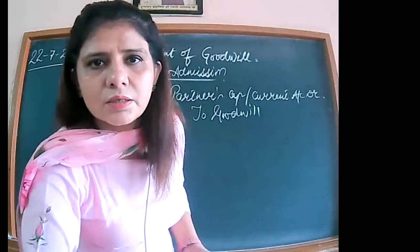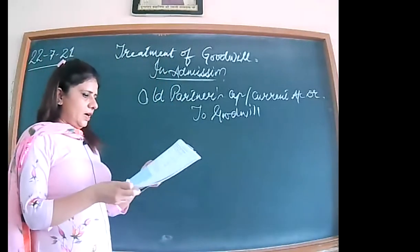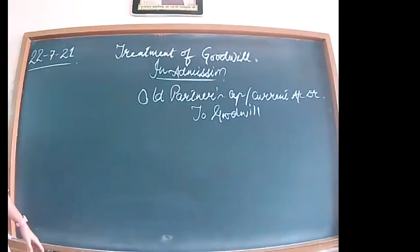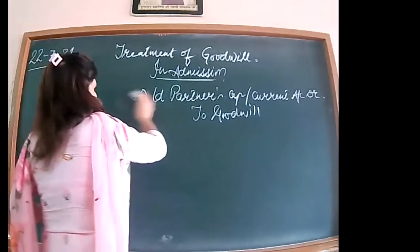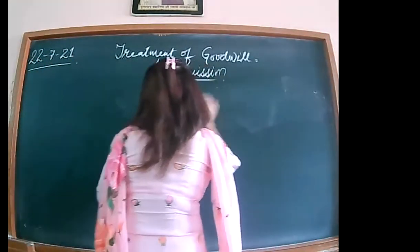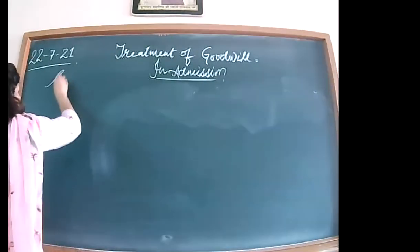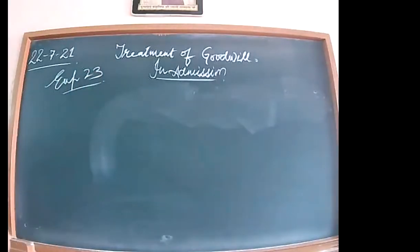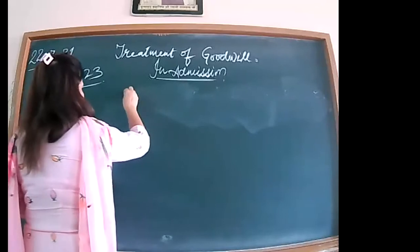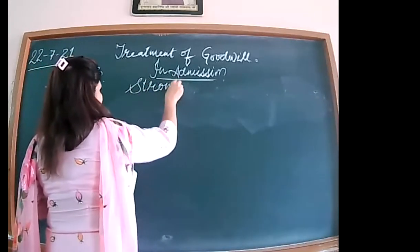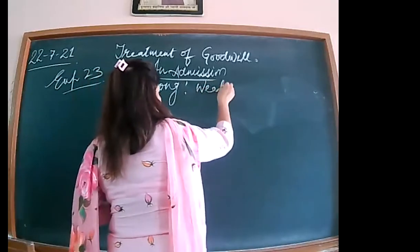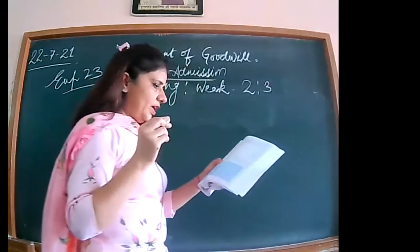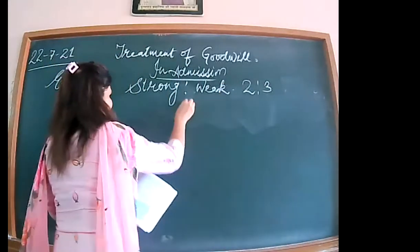Now come to the 23rd illustration, where a different case is presented. We will read the statement and work through what new concept or trick is being put in that question. In the 23rd illustration, the partners are Strong and Weak, and their profit sharing ratio is 2 is to 3. On 1st April, Abel has been admitted as a new partner.